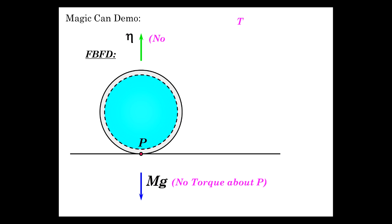Same thing. No torque about P because it goes through P also.